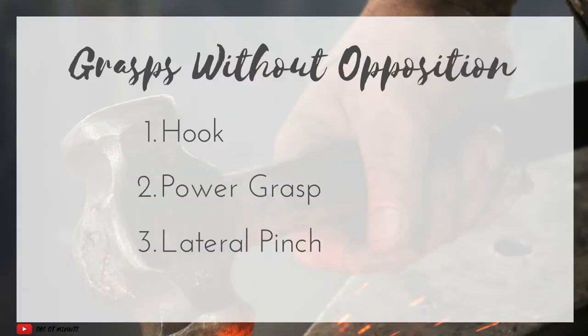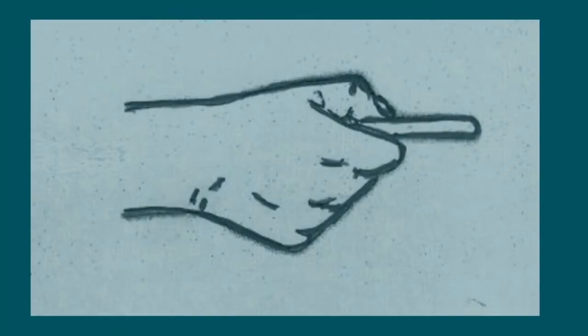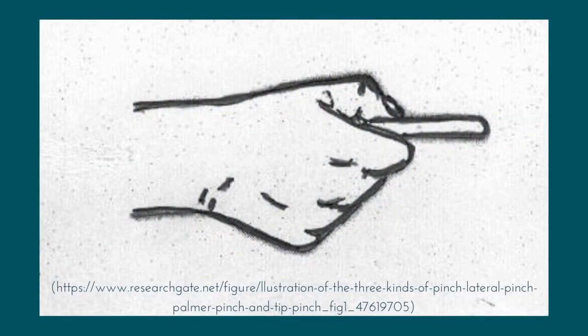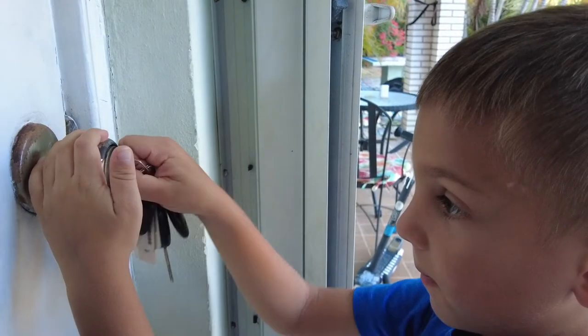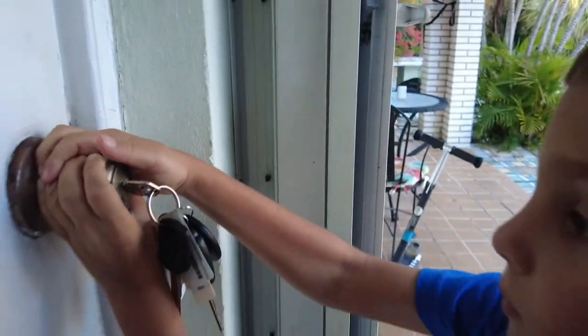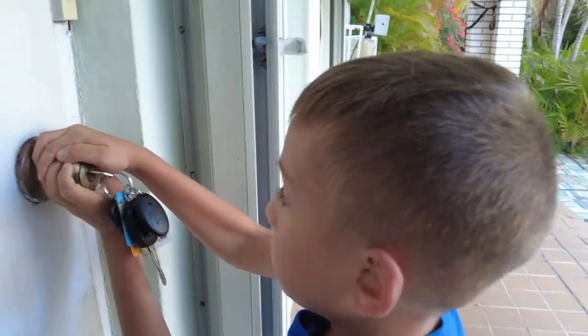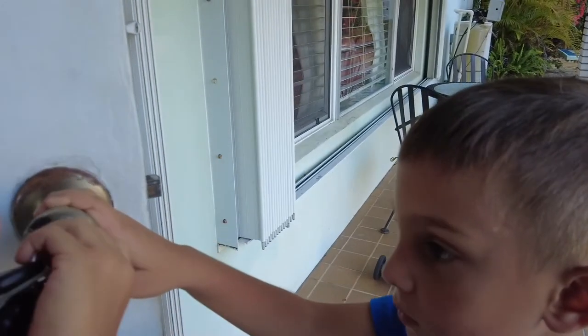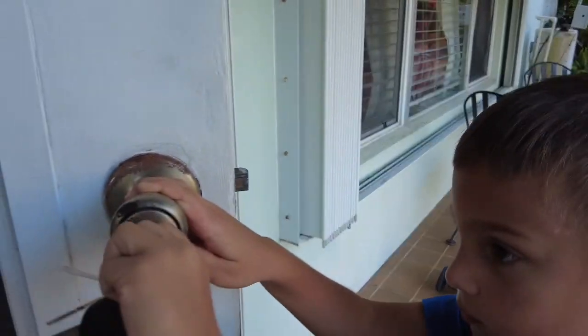Next is the lateral pinch, which is also a really useful pinch. Again, this would be a pinch that doesn't use opposition. This is where the thumb is pressed against the lateral side of the PIP joint of the index finger. I remember this as our key pinch — the pinch where if you were to hold one single key, put it in the door, and turn the key, it's that type of hold.